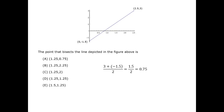Another approach here would be to find the equation of the line in the form y equals mx plus b. You can determine the slope m from the rise over run between the two points. The y-intercept b is negative 1.5. Then you could find the point on the line that is halfway along the run at an x-value of 1.25, and you would find that at that x-value, y equals 0.75.